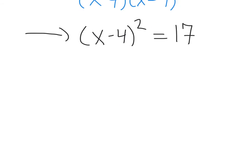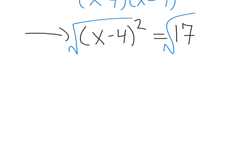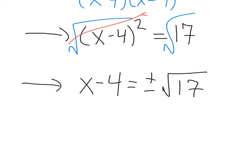From here it's easy sailing. Square root both sides: that'll be x minus 4 equals plus or minus the square root of 17. Adding 4 over, we get x equals 4 plus or minus the square root of 17. That's our answer.